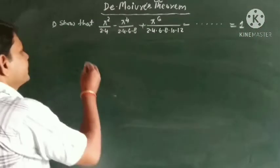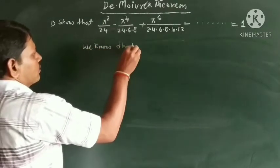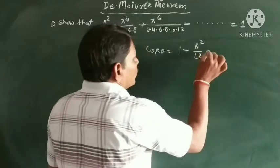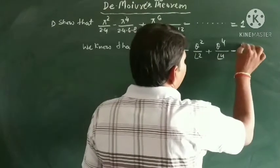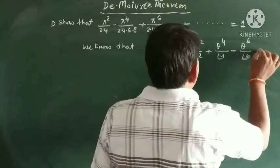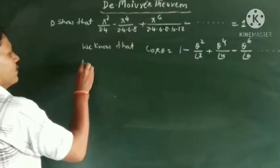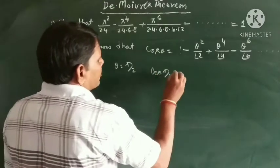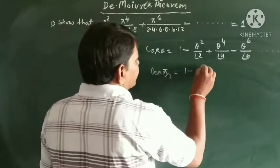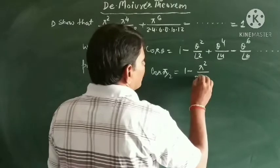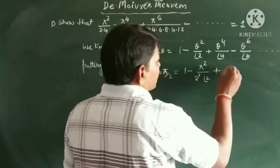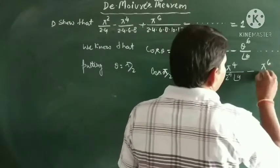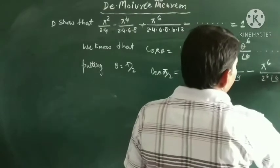We know that cos theta is equal to 1 minus theta squared upon factorial 2, plus theta to the power 4 upon factorial 4, minus theta to the power 6 upon factorial 6, and so on. Putting theta equal to pi by 2, then cos pi by 2 equals 1 minus pi squared upon 2 to the power 2 into factorial 2, plus pi to the power 4 upon 2 to the power 4 into factorial 4, minus pi to the power 6 upon 2 to the power 6 into factorial 6, and so on.